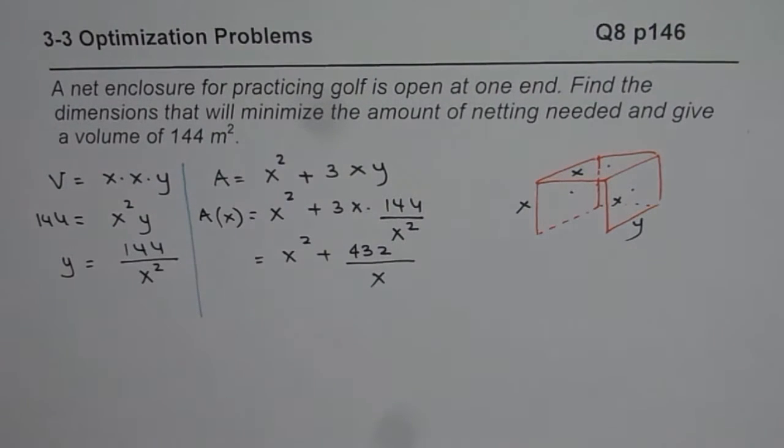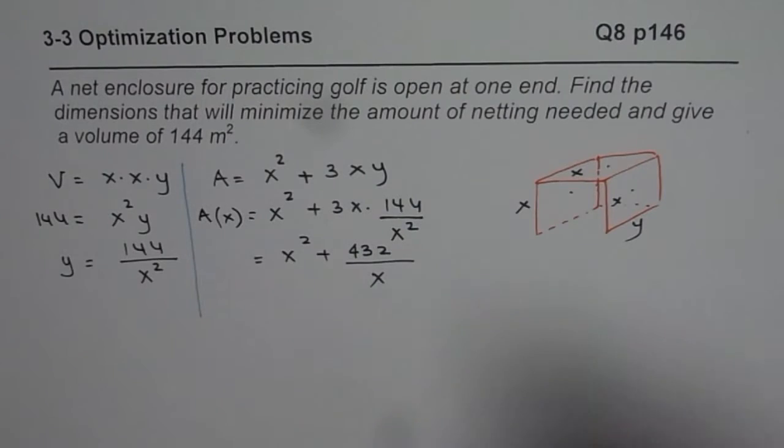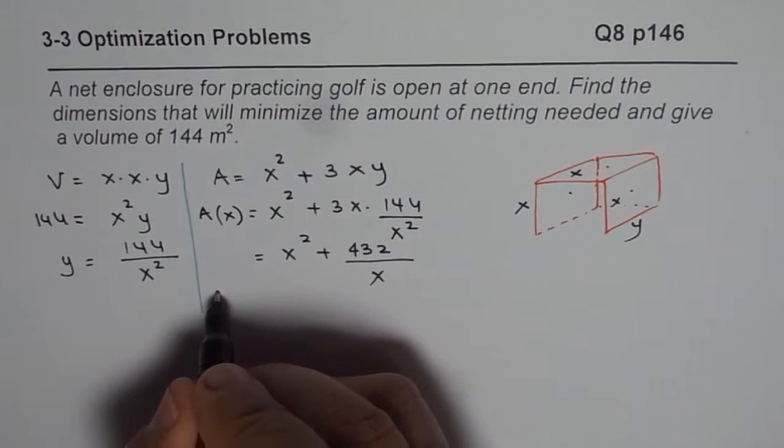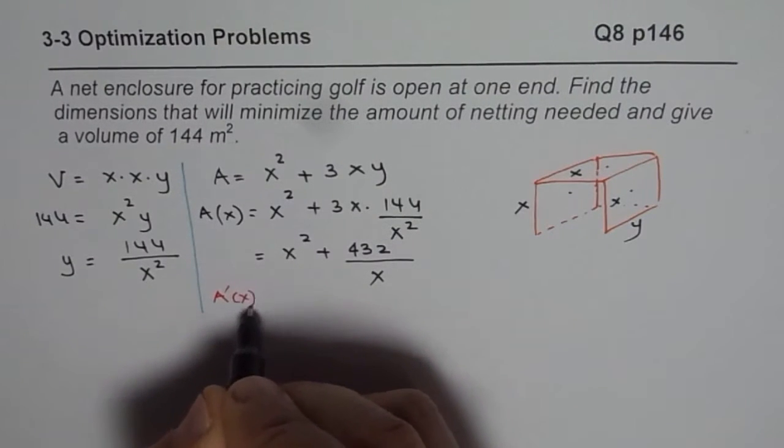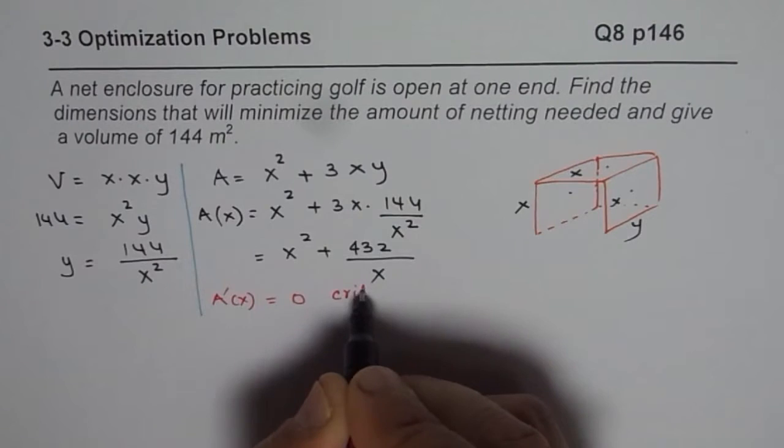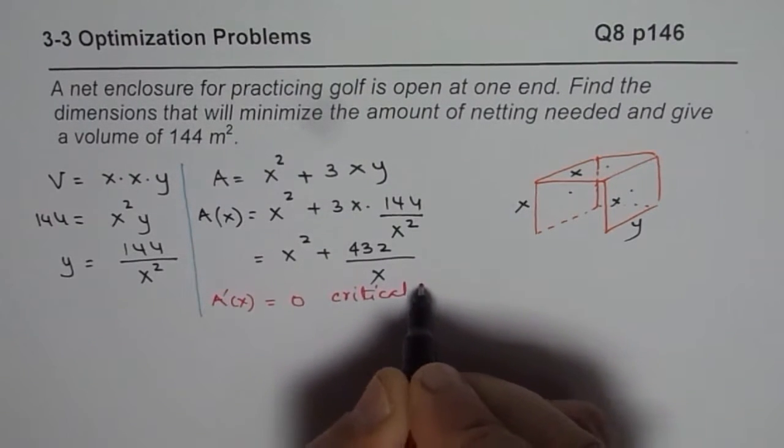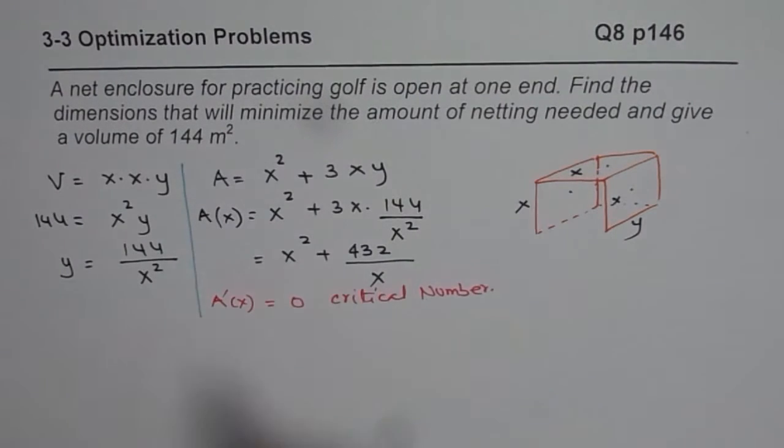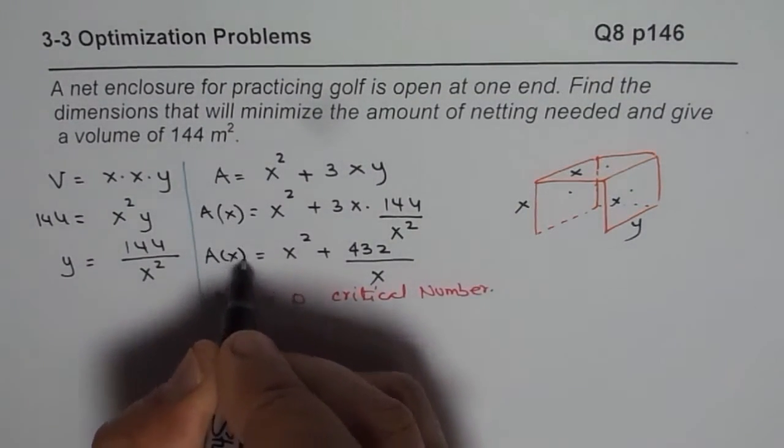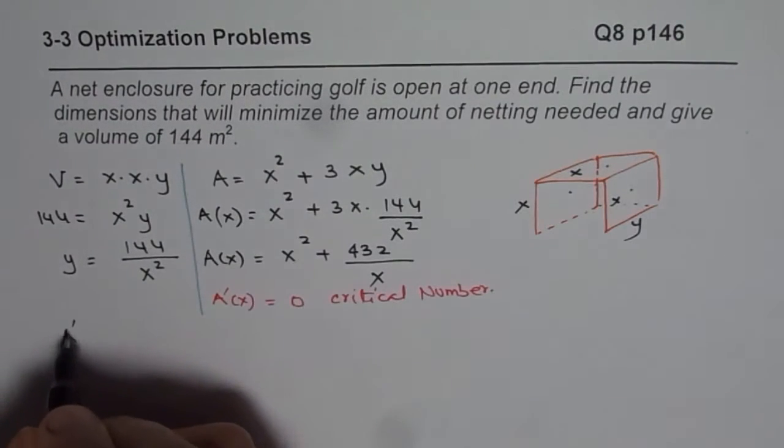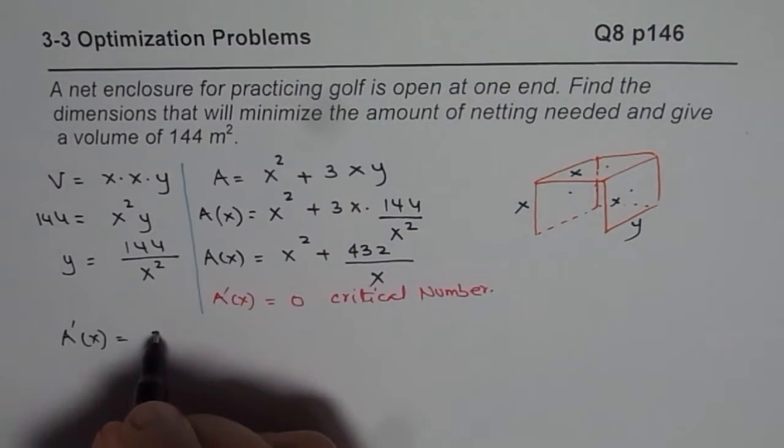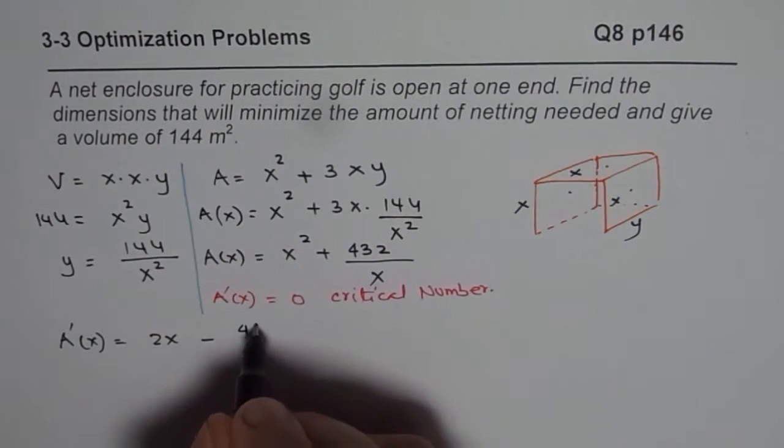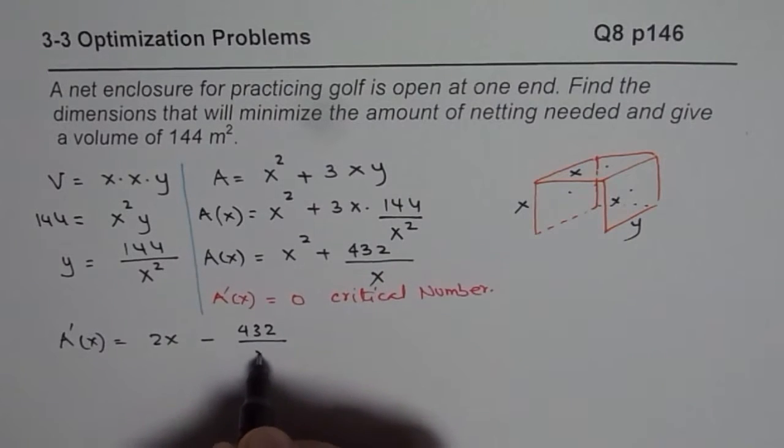Now, to find the minimum area, what we can do here is we can find the derivative. So we'll find the critical point, that means A prime x should be equal to 0, that will give us the critical number. So let's find the critical number now. So for finding critical number, we'll take derivative of this area. So A prime x, the derivative will be 2x minus 432 over x square, so that becomes the derivative.